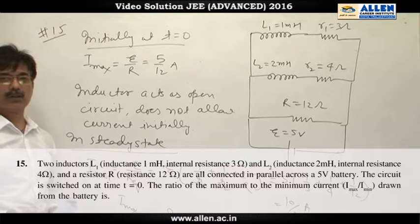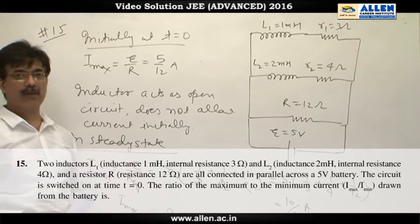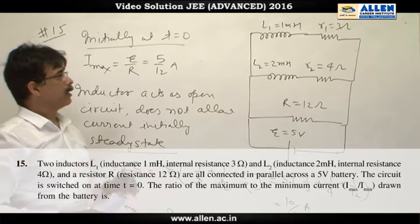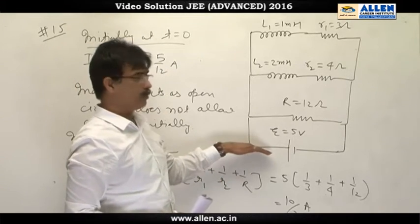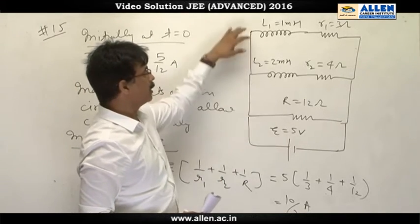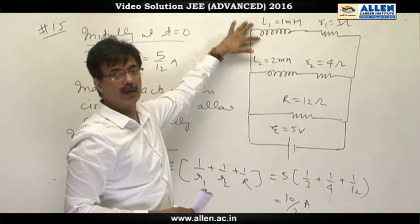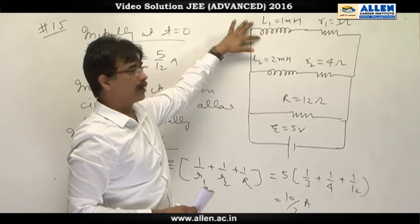Question number 15. This question is based on basic concept of RL circuit. At T equal to 0, when switch is closed, initially inductor does not allow any current. It acts as open circuit.